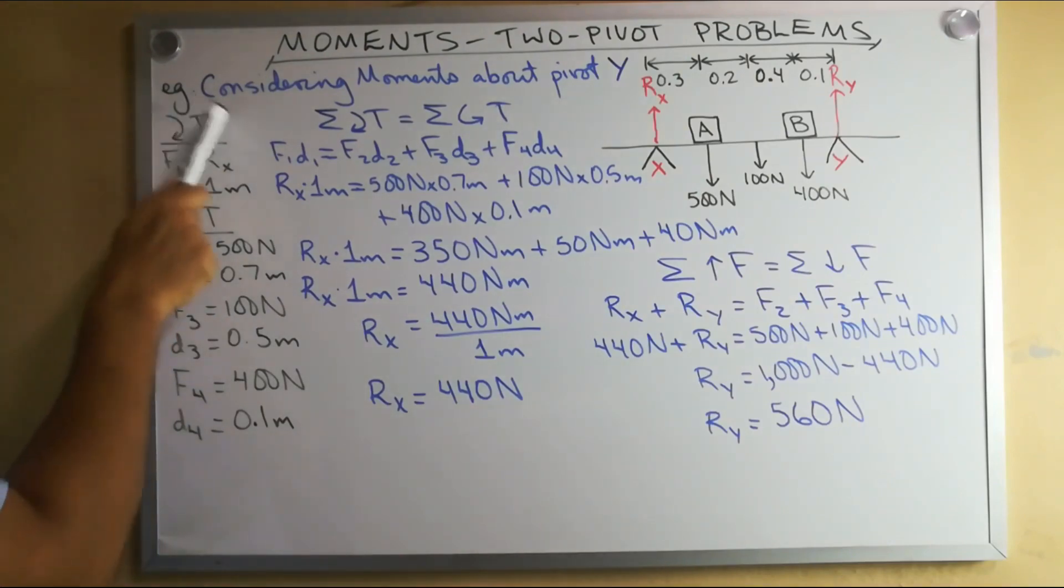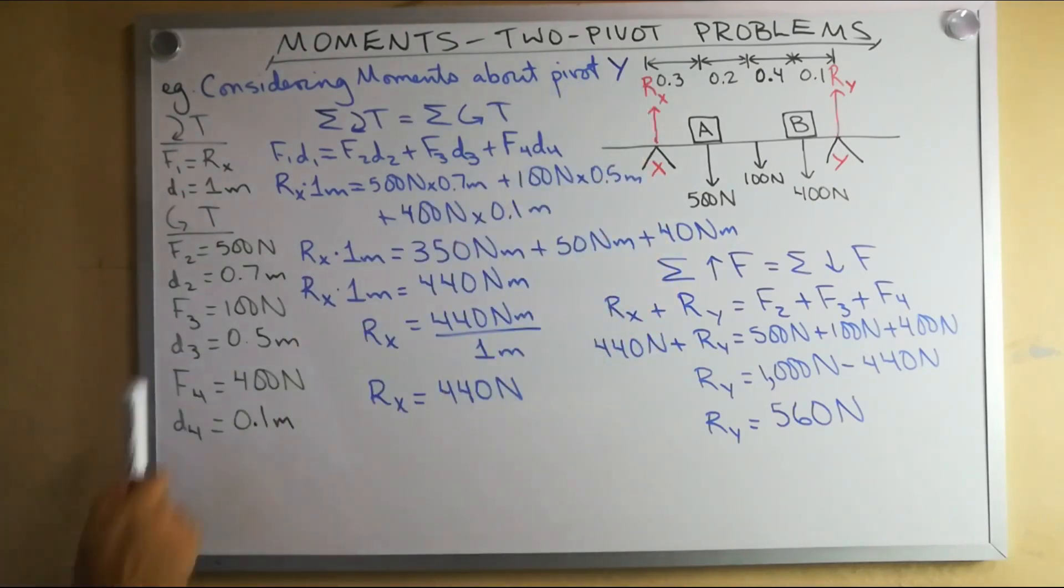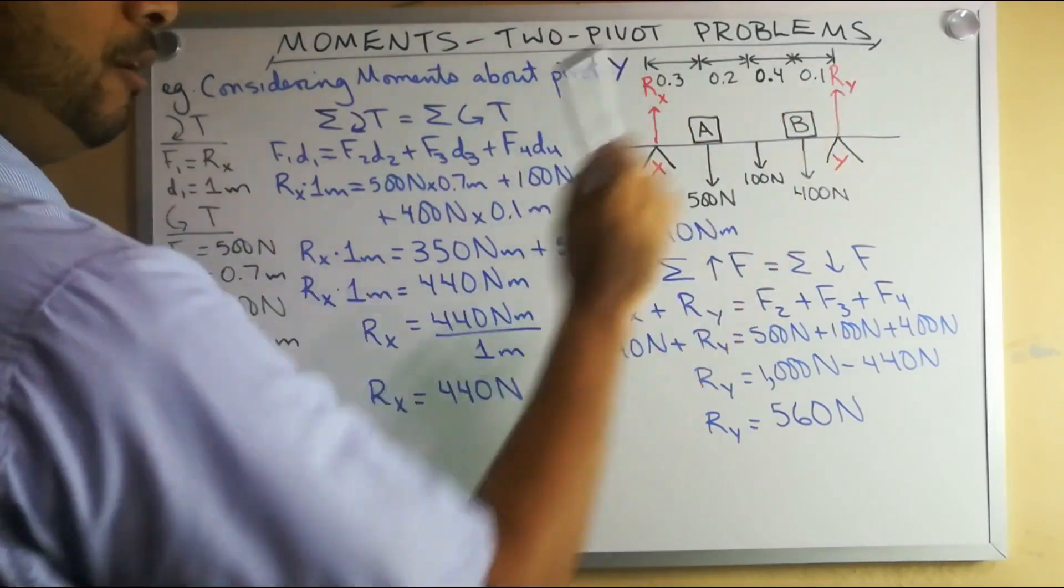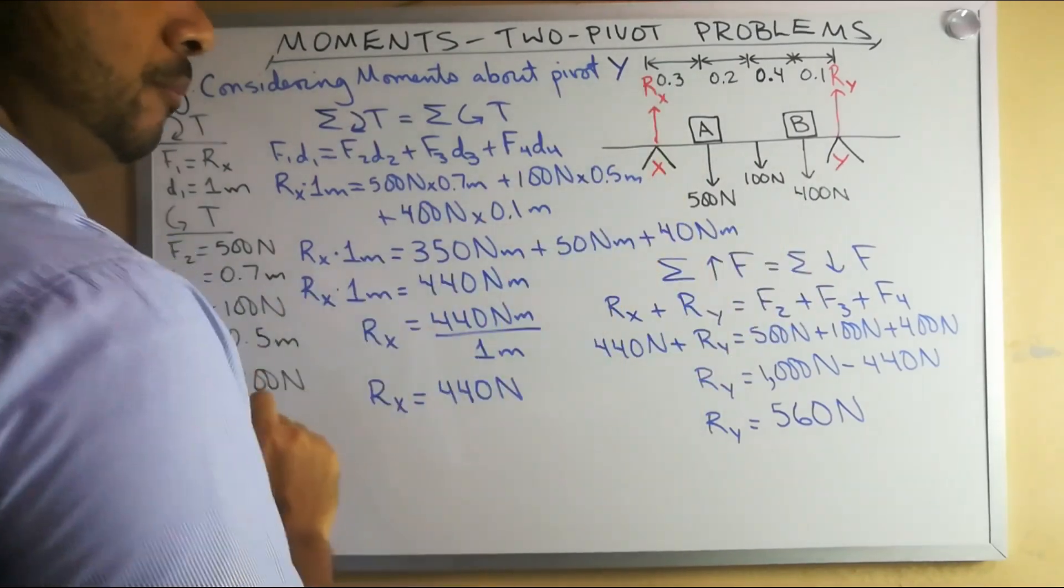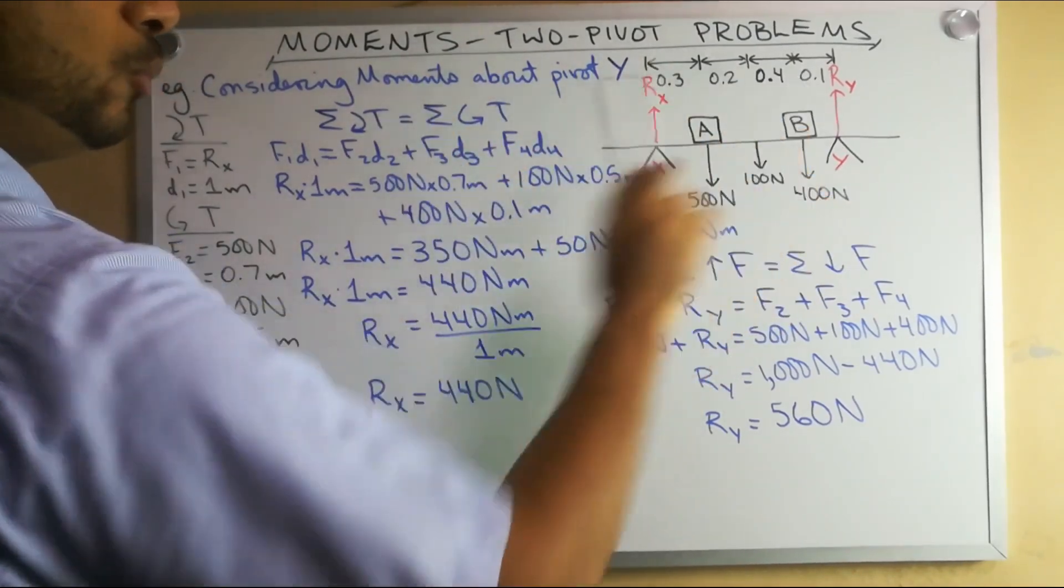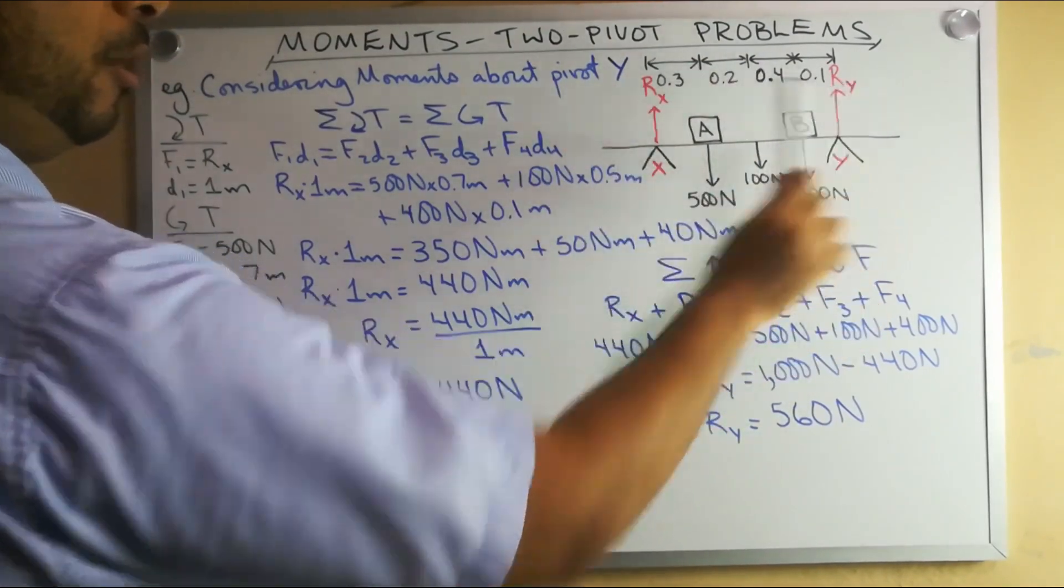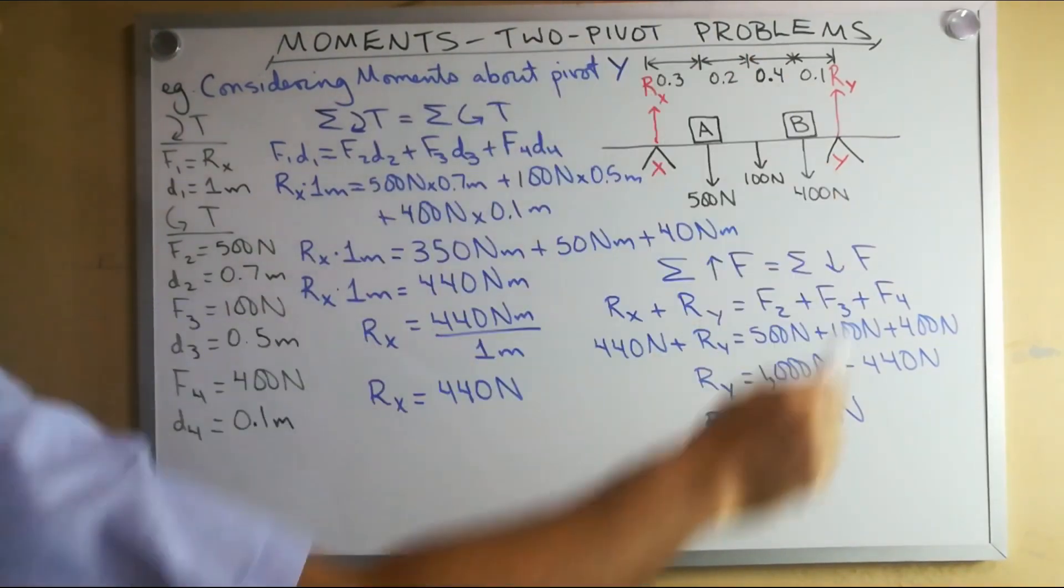When I look at my clockwise moments, my first force is our unknown reactionary force R sub X. The distance from pivot X to pivot Y is one meter which is the sum of all of these distances here. How far is X to Y? It is not 0.3 meters. It is not 0.2 individually. It is the distance all the way from X to Y which is the sum of all of those. Then there are no more clockwise moments to consider.